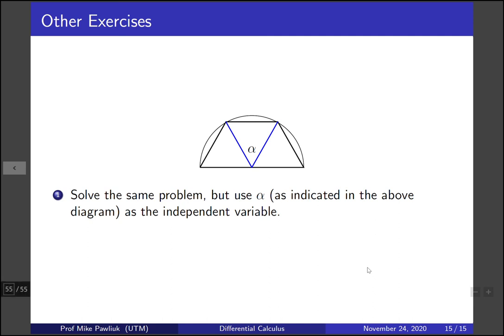And let's end with an exercise. Solve the same problem of maximizing the area of the trapezoid. But instead of using the angle theta here, or instead of using the height, use this angle right here as your independent variable. Thank you very much, and have a great day.